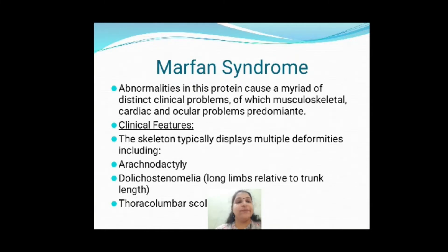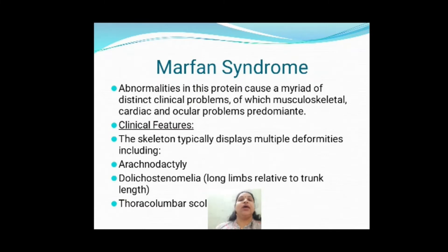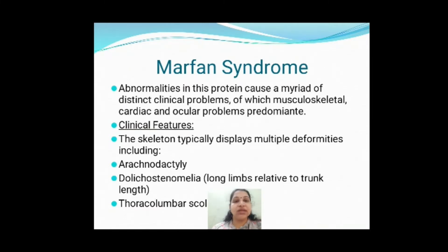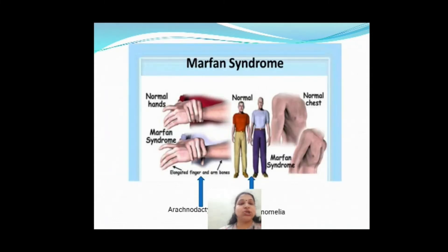When you write about Marfan syndrome, it is a heritable defect of connective tissue due to mutation of the fibrillin-1 gene coding for fibrillin, and three systems are mainly affected: cardiovascular, musculoskeletal, and ocular. In the musculoskeletal system, three main deformities will be seen.